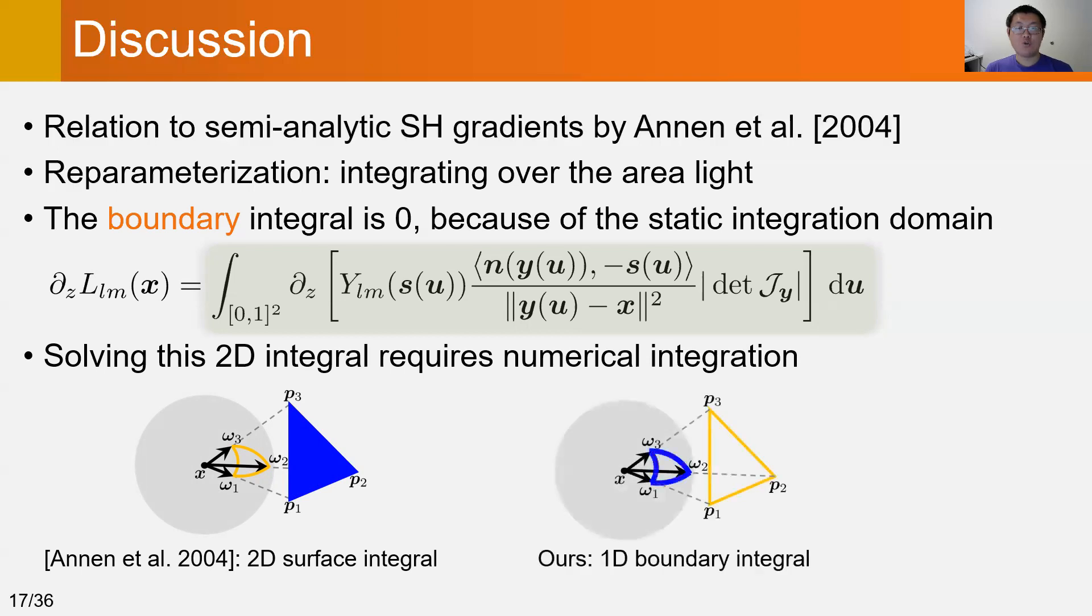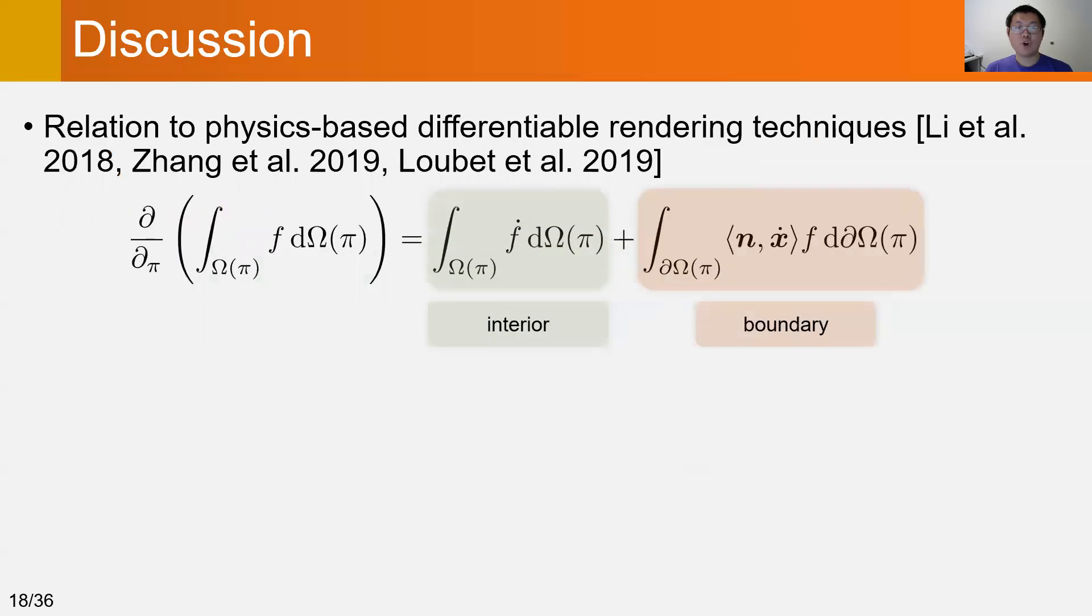In contrast, our parameterization results in a 1D boundary integral, which can be computed in closed form. Parameterization of the integration domain is critical for differentiation.